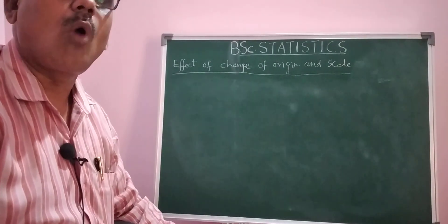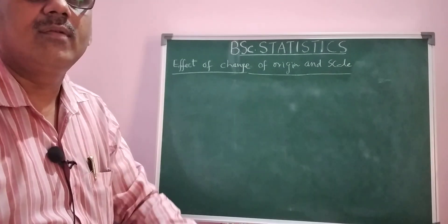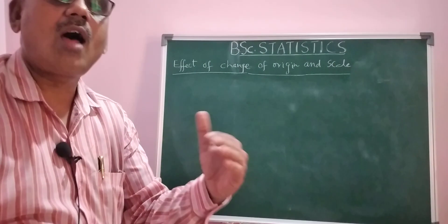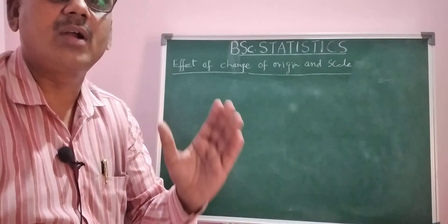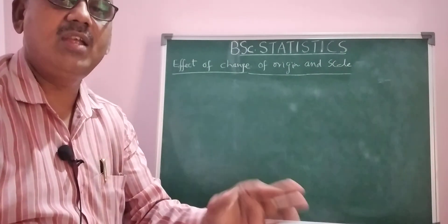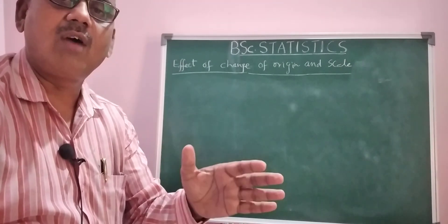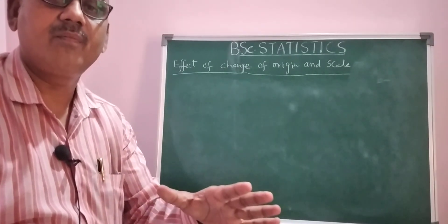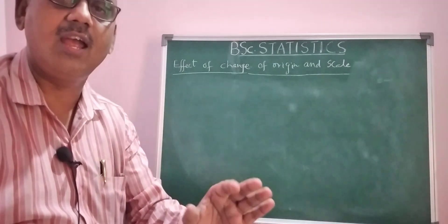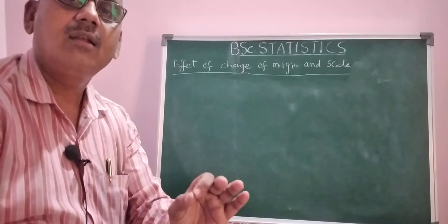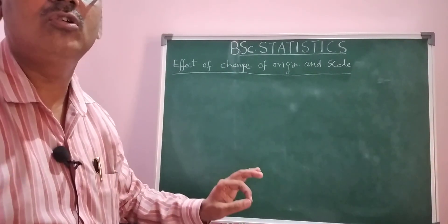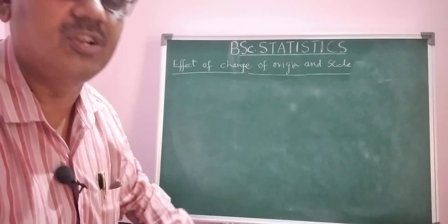What is meant by shifting the origin? If you consider a variable and subtract one particular arbitrary value — let it be 'a' — from all the values of x, that is x minus a, then the origin will be shifted. Now I will prove this through a graph and by taking some observations.